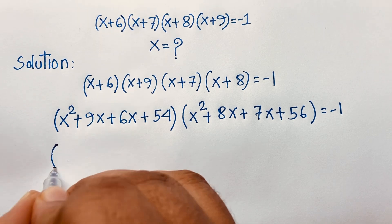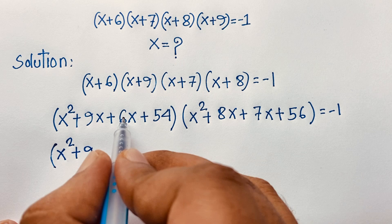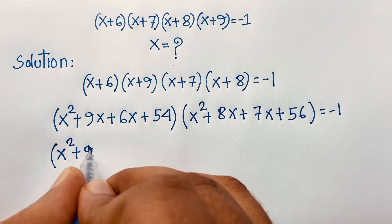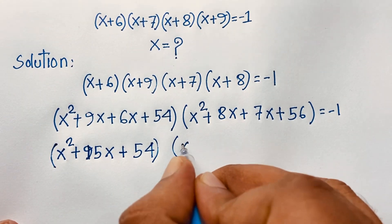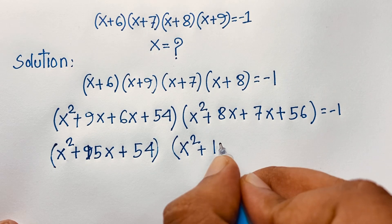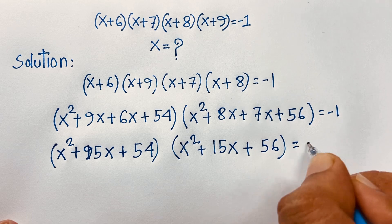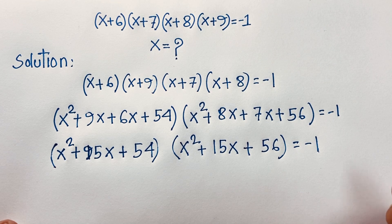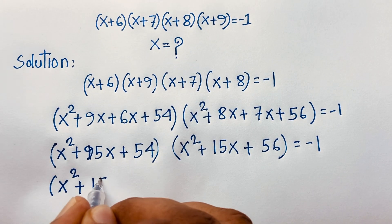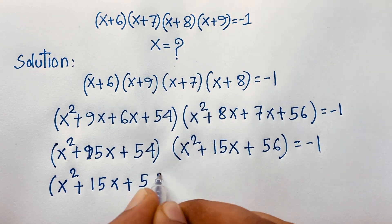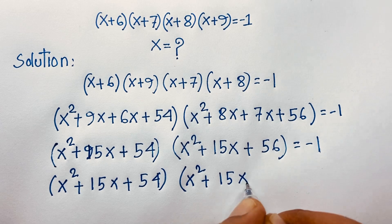Simplifying: the first expression is x² + 15x + 54, and the second expression is x² + 15x + 56. Both share the same x² + 15x structure. This quadratic pattern is key to our solution.